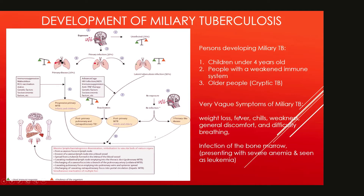The symptoms of miliary tuberculosis include weight loss, fever, chills, weakness, general discomfort, and difficulty breathing. Infection can spread to the bone and bone marrow, which could be misunderstood or present as severe anemia and be mistaken for leukemia.